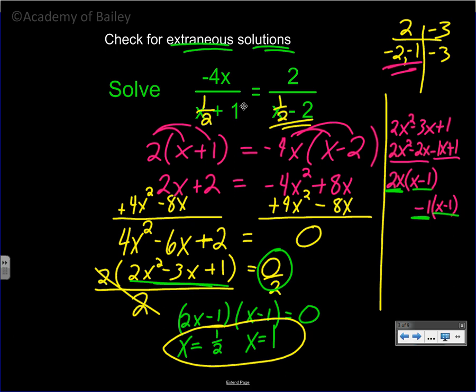You could have said x cannot equal negative 1 and x cannot equal 2, because if x were negative 1 or 2, the bottom of those fractions would be 0, which is not allowed. And neither one of our solutions are negative 1 or 2. So either you can figure out what would make 0 on the bottom, or you can take your solutions and plug them in to see that they don't make 0 on the bottom.